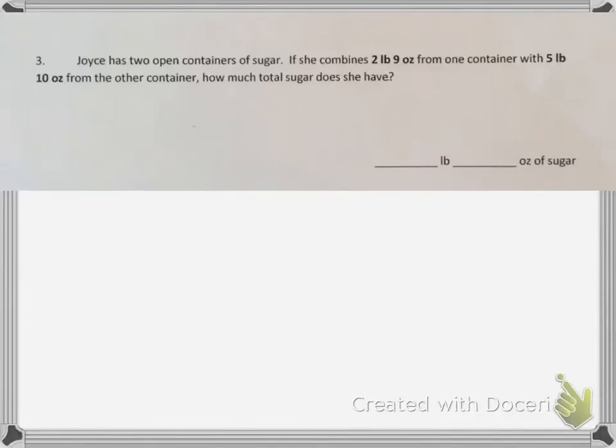Joyce has two open containers of sugar. If she combines 2 pounds 9 ounces from one container with 5 pounds 10 ounces from the other container, how much total sugar does she have?